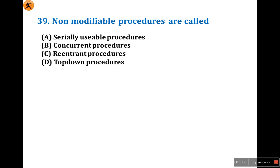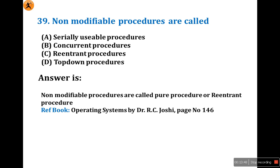Non-modifiable procedures — there are modifiable and non-modifiable procedures. Non-modifiable procedures are called pure and reentrant procedures. Being a pure procedure is a characteristic of a non-modifiable procedure, and another characteristic is being a reentrant procedure. Refer to the operating system book by Dr. R.C. Juicy, page 146. The answer is that non-modifiable procedures are called reentrant procedures. So the answer is C. Be careful — this question has been asked two to three times repeatedly.